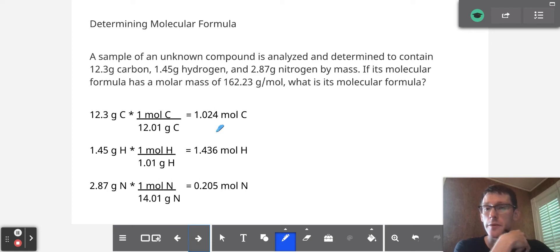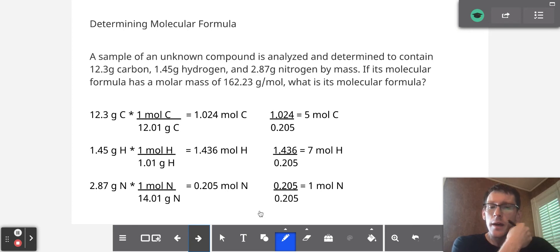Next, we have to divide all three of these by the lowest among them, which is essentially setting the smallest among them to one. That would be the number of nitrogen. We find that for every one mole of nitrogen, there are five moles of carbon and seven moles of hydrogen. Therefore, the empirical formula is C5H7N.